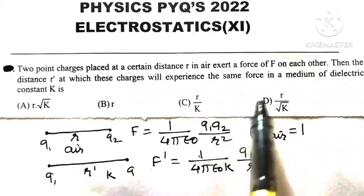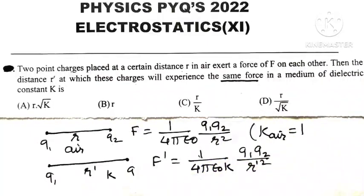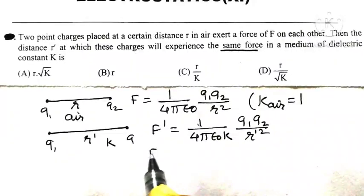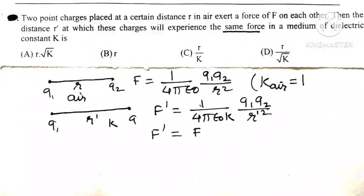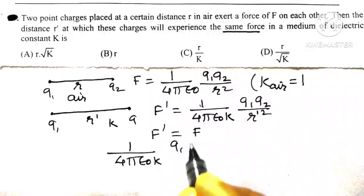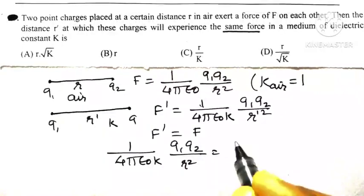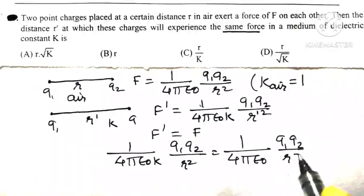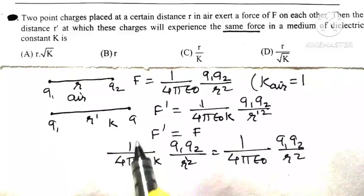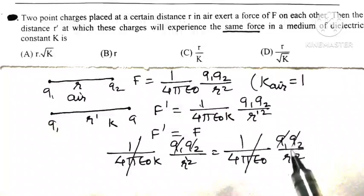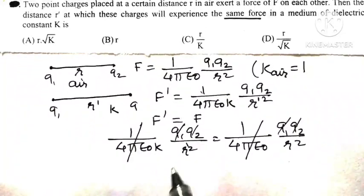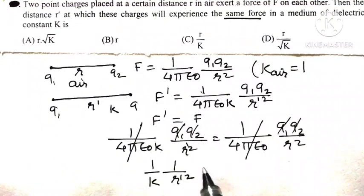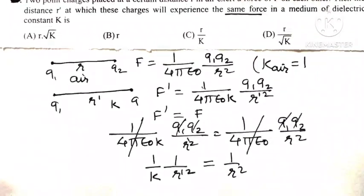The condition given is that F' = F. Setting the two force equations equal: (1/4πε₀K) × Q1Q2/R'² = (1/4πε₀) × Q1Q2/R². The common terms (1/4πε₀), Q1, and Q2 cancel out, leaving 1/(K × R'²) = 1/R².